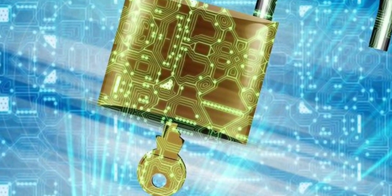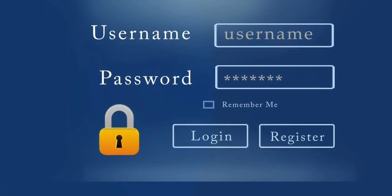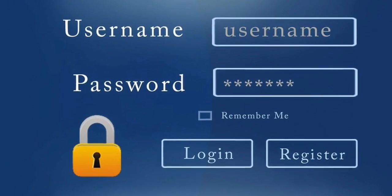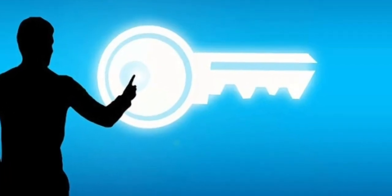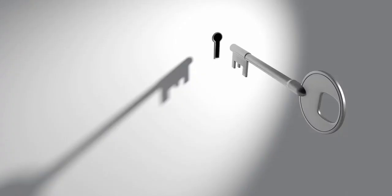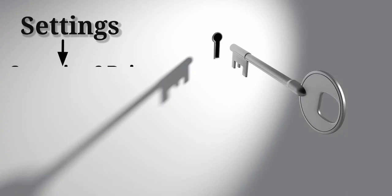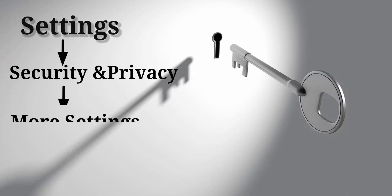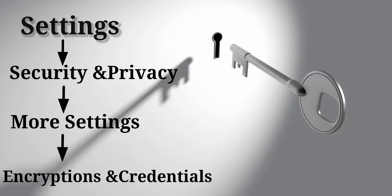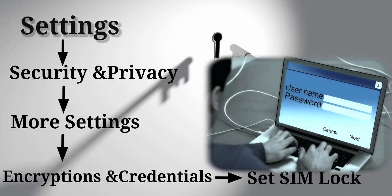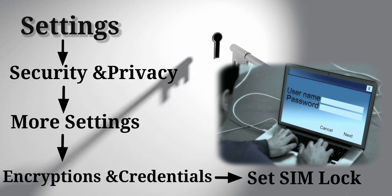You can find files with your email and password. You can still use a password. You can search the phone, click Security and Privacy, click More Settings, click Encryption and Credentials. You can click the option to set a SIM lock symbol, select it, and click the popup. The default PIN is open — if you enter the default PIN, you are set. The default PIN is set.